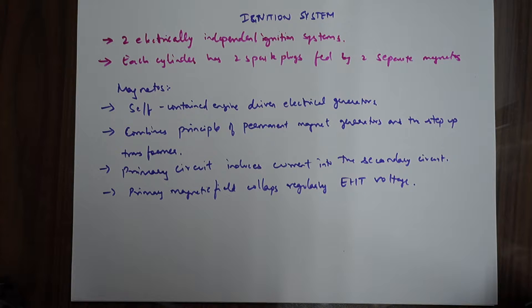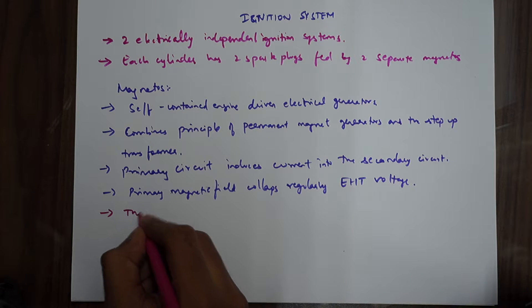The induced voltage in the secondary circuit is then taken to a distributor where the firing order is set. It depends on different engines. If I remember the previous videos I discussed, the firing orders are 1-3-4-2 or whatever. It depends on the type of engine you are using. So the distributor distributes that to the sparking plugs in the firing sequence.